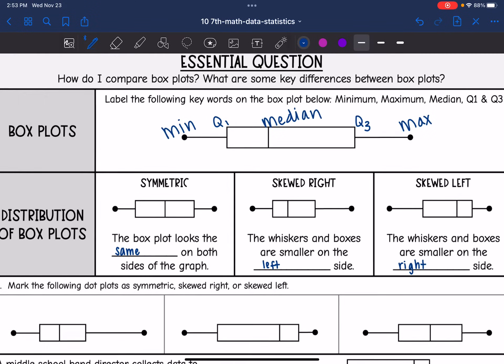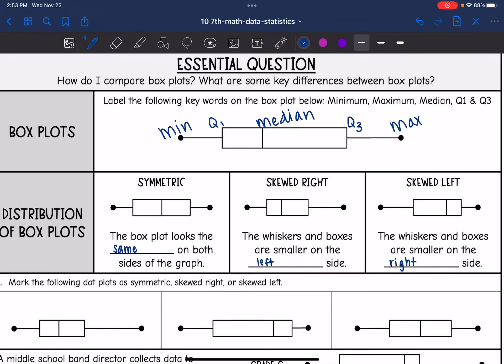So we have box plots that can be distributed differently. This first one is symmetric because the box plot looks the same on both sides of the graph. Then this one is skewed right because the whiskers and boxes are smaller on the left. There's more on the right. And then this one is skewed left because there's more on the left. The whiskers and boxes are smaller on the right side.